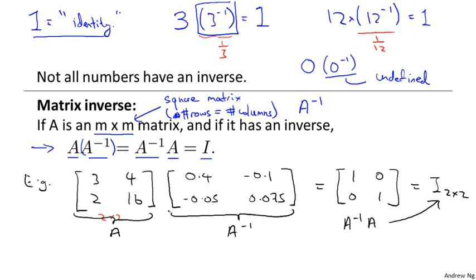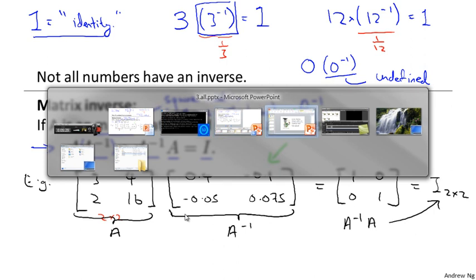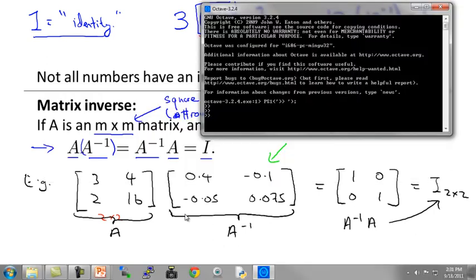So how did I find this inverse? How did I come up with this inverse over here? It turns out that sometimes you can compute inverses by hand, but almost no one does that these days. There's very good numerical software for taking a matrix and computing its inverse. This is one of those things where there are lots of open source libraries that you can link to from any of the popular programming languages to compute inverses of matrices. Let me show you a quick example how I actually computed this inverse. And what I did was I used software called Octave. We'll see a lot more about Octave later.